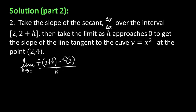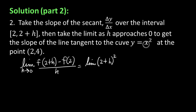This gives us the slope of the line tangent to the curve, which is also the instantaneous rate of change of the function y. It's also the derivative value at the point x equal to 2. So let's write that down. It's going to be the limit of (2 + h) squared, because f(2 + h) means plugging 2 + h in for x and squaring it, minus f(2), which is 2 squared. The whole thing divided by h, as h goes to 0.